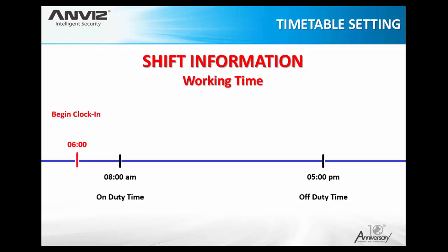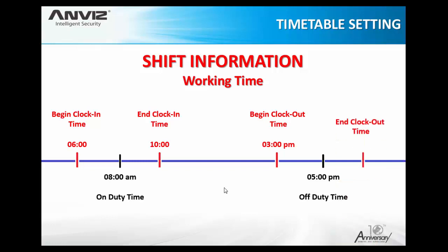The second field to set is the Begin Clock In time. We need to establish a time before the on-duty time that will be the first limit — the Begin Clock In. After it there will be an End Clock In limit. For example, if I'm an employee who needs to clock in at eight o'clock, my Begin Clock In limit is six o'clock and my End Clock In limit is ten o'clock. Similarly for clock out: the Begin Clock Out starts at three o'clock in the afternoon (15:00) and the End Clock Out is at seven in the evening.